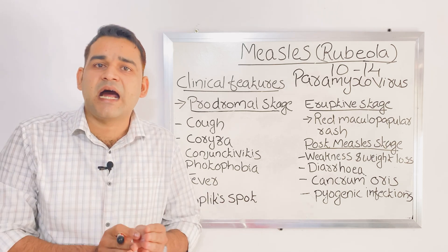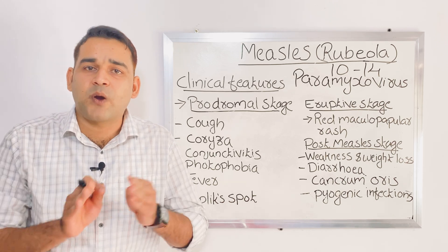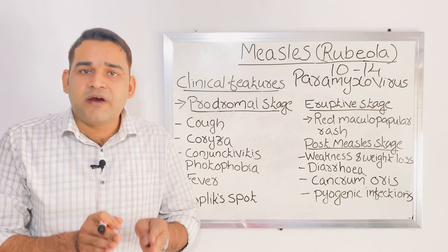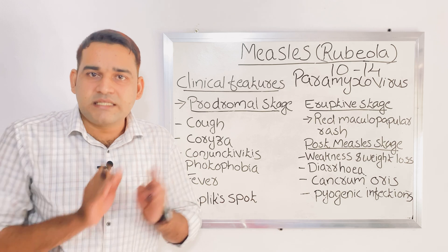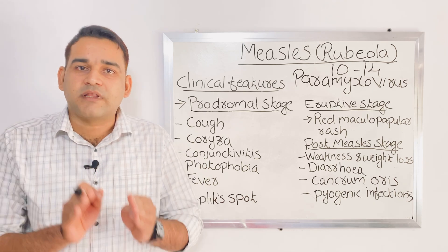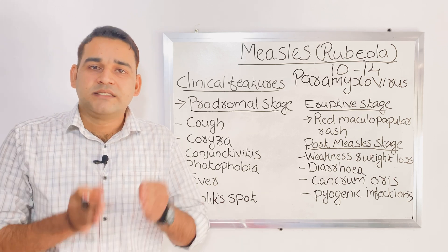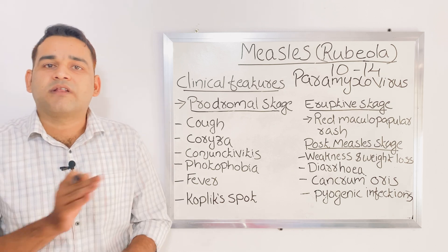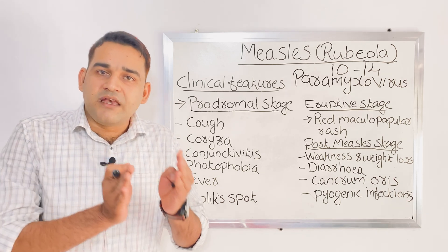Regarding the treatment of measles, there is no proper antiviral drug for measles. Symptomatic treatment is given: for fever, we can give antipyretics; advise the child to drink plenty of water; and in case of pyogenic or bacterial infection, we can give antibiotics.